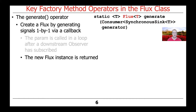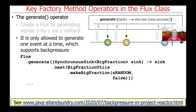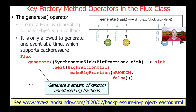A new Flux instance is returned from generate. What's interesting about this example is that generate is only allowed to generate one event at a time, which helps to support back pressure. In this particular example, you can see we use the Flux generate method to take a synchronous sink parameter as a lambda expression and then call its next method in order to generate a random big fraction, so this method will just keep generating a stream of random unreduced big fractions.